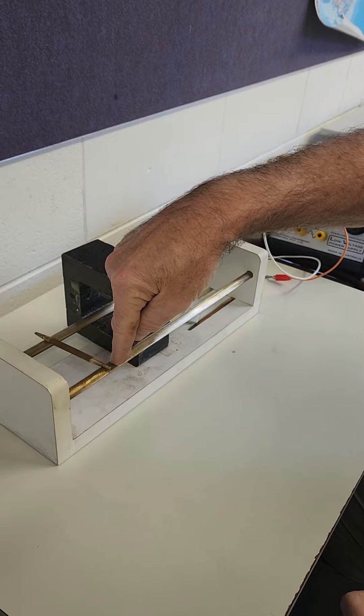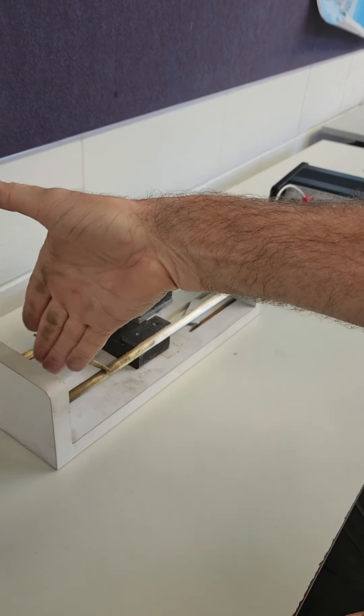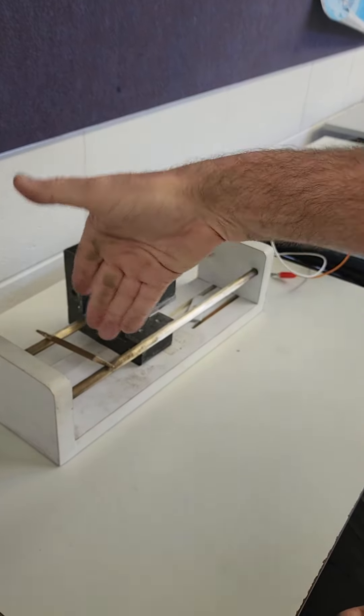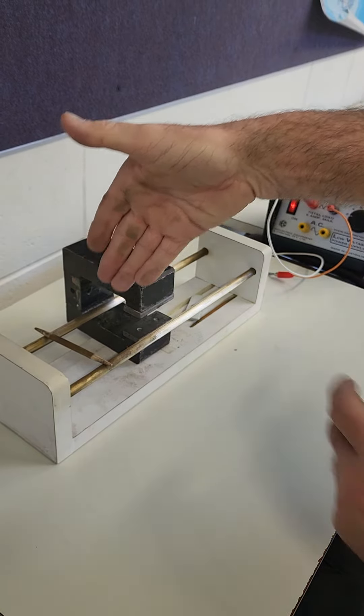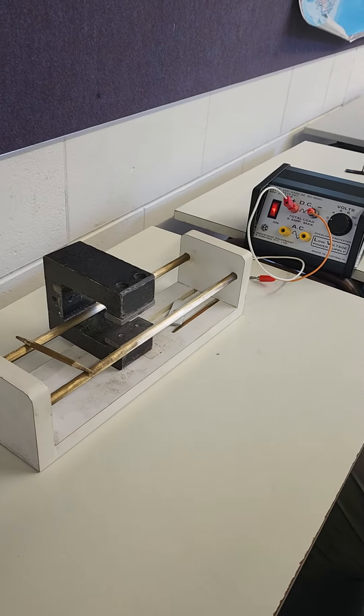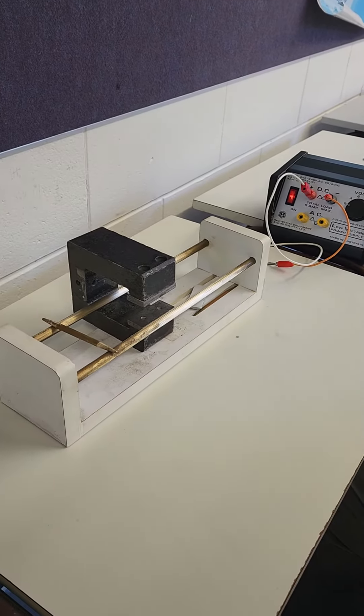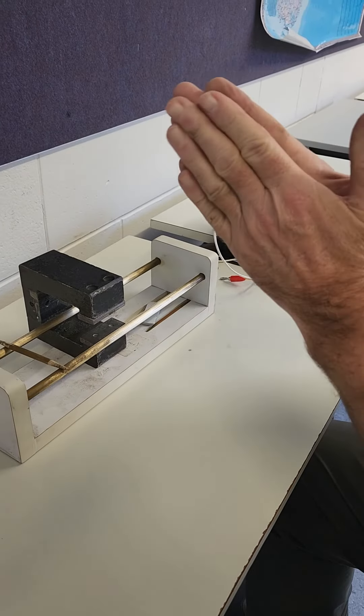So the current will be from positive to negative, in the opposite direction. And the direction of the field will still be there, North to South. And you're using the right hand slap rule. Excellent. Thank you very much.